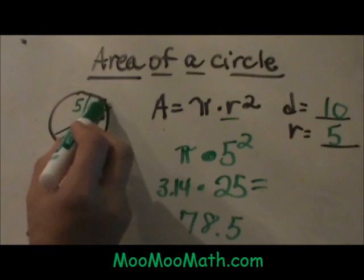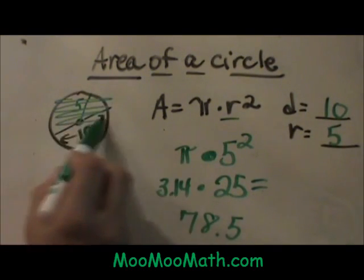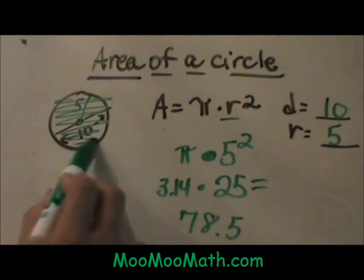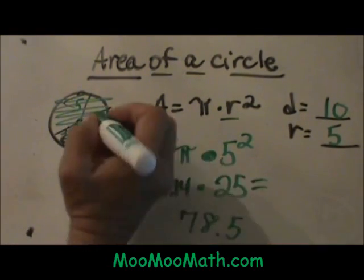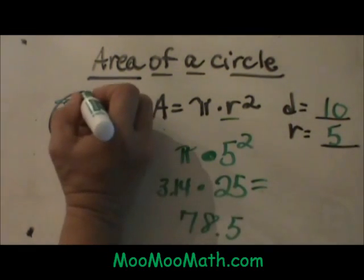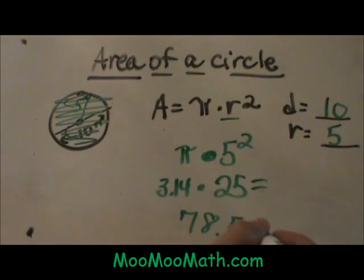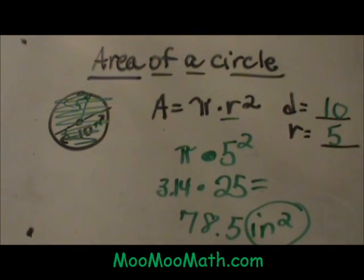Area of the circle is 78.5. Area is two-dimensional, so it is the space inside the circle. Let's say our units were inches — then we would say that is 78.5 inches squared, because it is a two-dimensional measure.